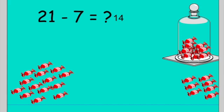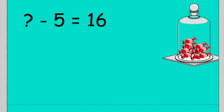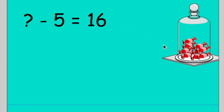Let's have a look at finding the missing number when it's at the start. This is a bit trickier because we don't know what number we've started with. We know how much has been taken away and we know how much we've got left. So what we're going to do is start off with the largest number — we're going to count what we've got left. What we've got left is 16, so let's put 16 here.